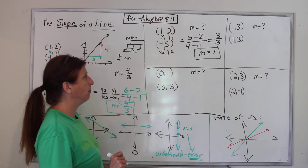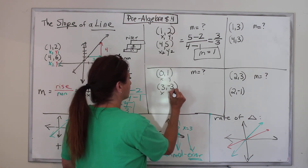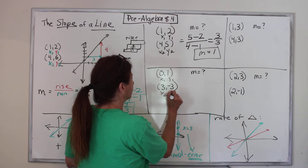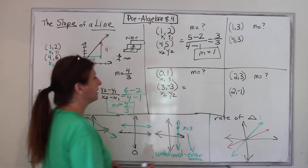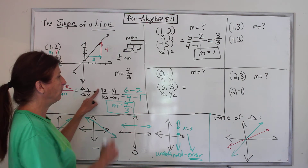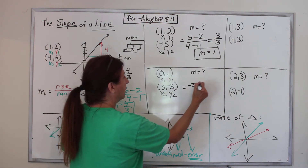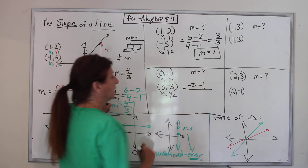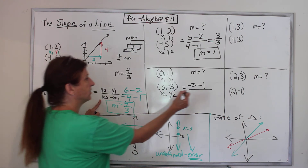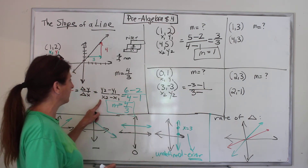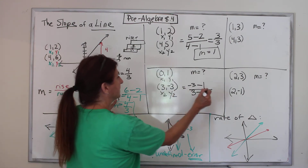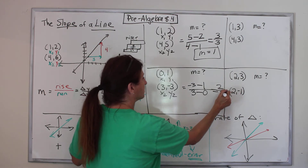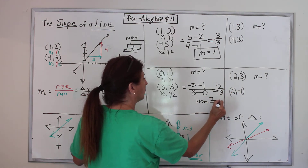Let's do this one. Step one: write your X's and Y's. Step two: which is less? Zero is less than three, so these are the 1s and these are the 2s. Step three: find Y2 — it's negative three. Draw your subtract sign. Find Y1 — it's 1. Draw the fraction bar. Find X2 — it's 3. Draw your subtract. Find X1 — it's 0. Do the math: negative 3 minus 1 is negative 2, 3 minus 0 is 3. Slope equals negative 2/3.